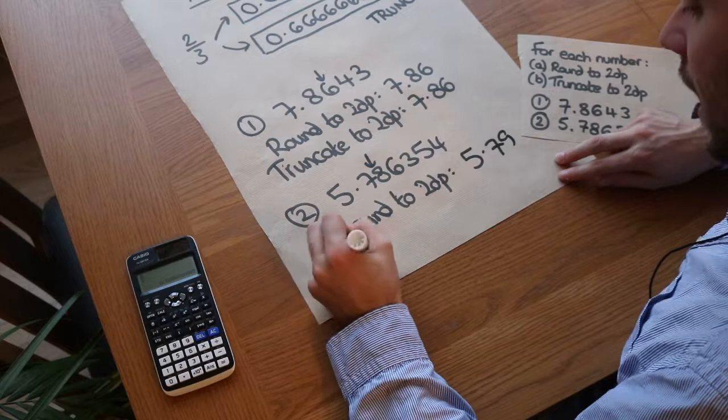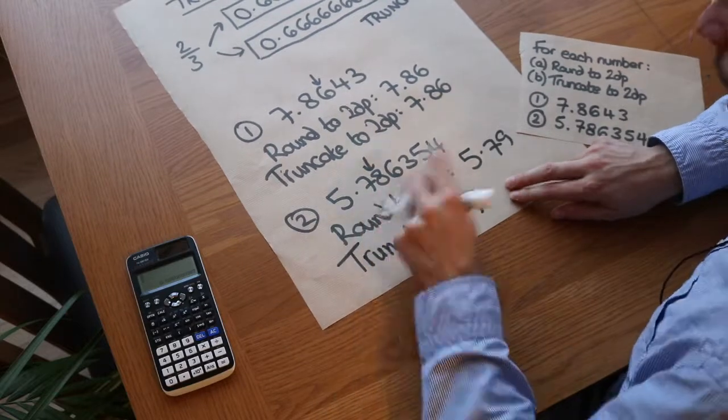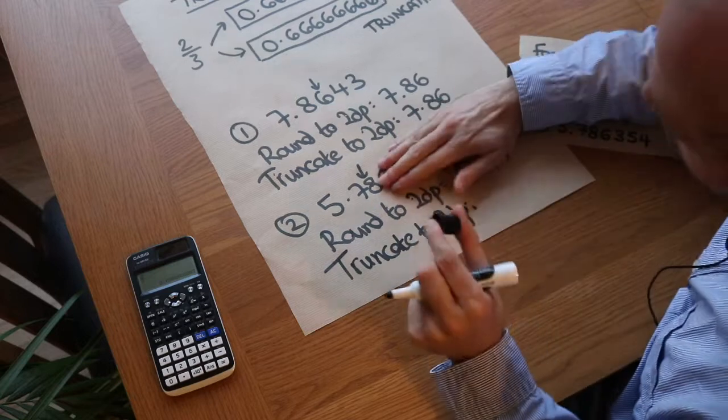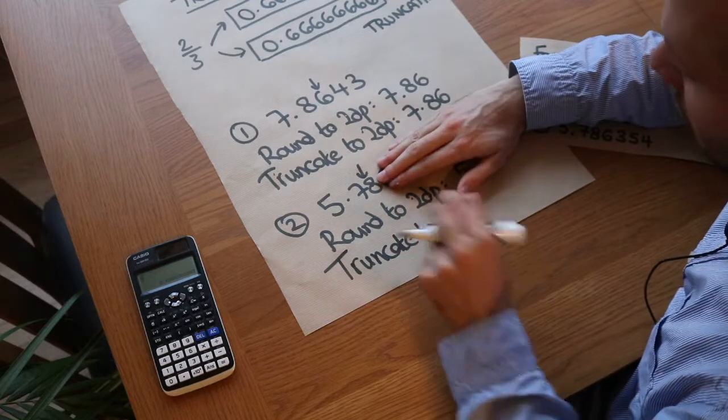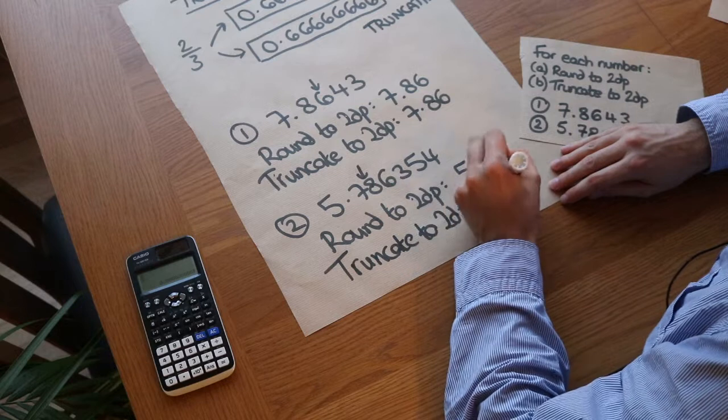Now if we truncate to two decimal places, we keep up to the eight, but we just wipe out everything after. We discard everything after without checking it, and it's just 5.78.